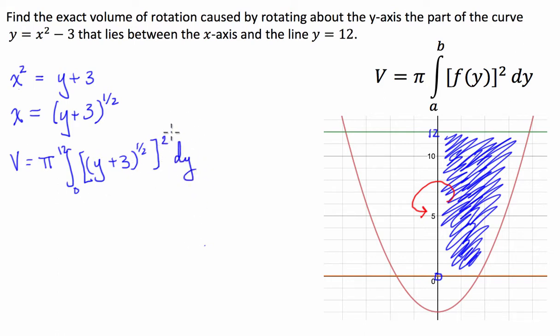Now we can fix this up a bit. We can take the square root of the bracket and we can times half by 2. They will basically cancel each other out, so we're left with the volume equals pi times the integral from 0 to 12 of y plus 3 dy.